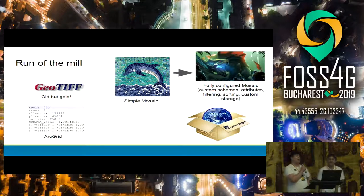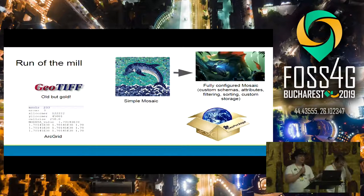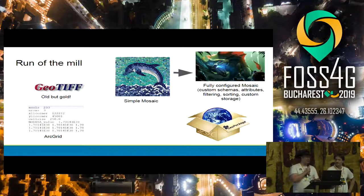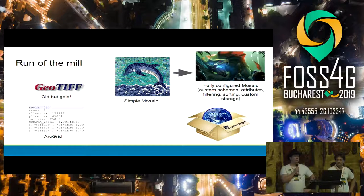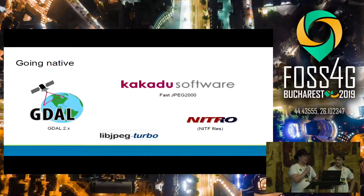In terms of raster support, we support GeoTIFF — it's been around forever and we really like it. We support ArcGrid — it's been around forever and we really don't like it. ImageMosaic combines all your little tiles into one happy raster image, with fully configurable custom schemas, attributes, filtering, and sorting. We also support rasters stored inside a GeoPackage.